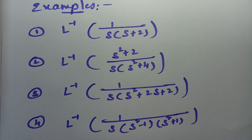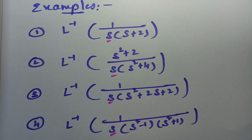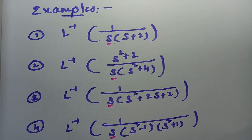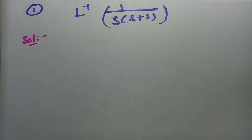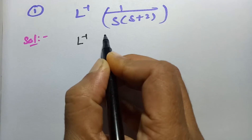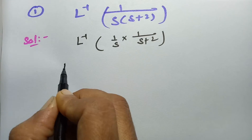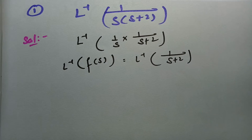Here are a few examples. By looking at the question itself you can tell it involves division by s — F(s) is clearly divided by s. Whenever you see s in the denominator, follow the division theorem and integrate once. If F(s) is divided by s twice, integrate twice. Let's get started. The first problem is: inverse Laplace transform of 1/(s(s+2)).